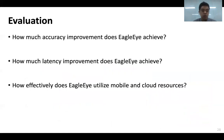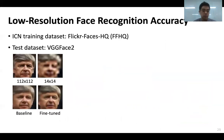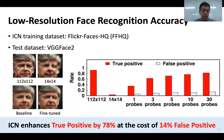For the evaluation, we answer three key questions: how much accuracy improvement does EagleEye achieve, how much latency improvement does it achieve, and how effectively does it utilize mobile and cloud resources? For face recognition accuracy, fine-tuning enables the reconstructed face to have clearly defined details of the original identity, such as wrinkles and eyelids. This enables the ICN to enhance true positives greatly by 78%, with only a 14% increase in false positives.